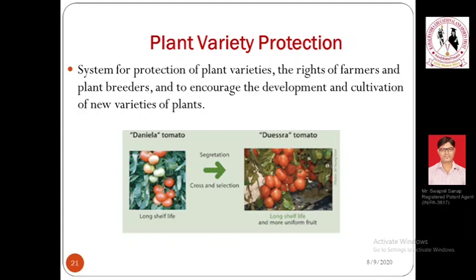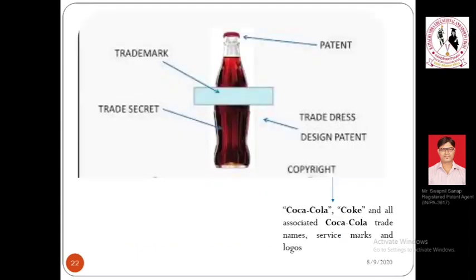Coming back to the Coca-Cola bottle example: different parts of this product have different IPRs. Starting from the cap — it is called a tamper-resistant bottle. This is a technology that tries to solve a specific problem. As the name indicates, tamper-resistant means that if this cap is opened or dislocated once from the bottle, it cannot be fixed again.